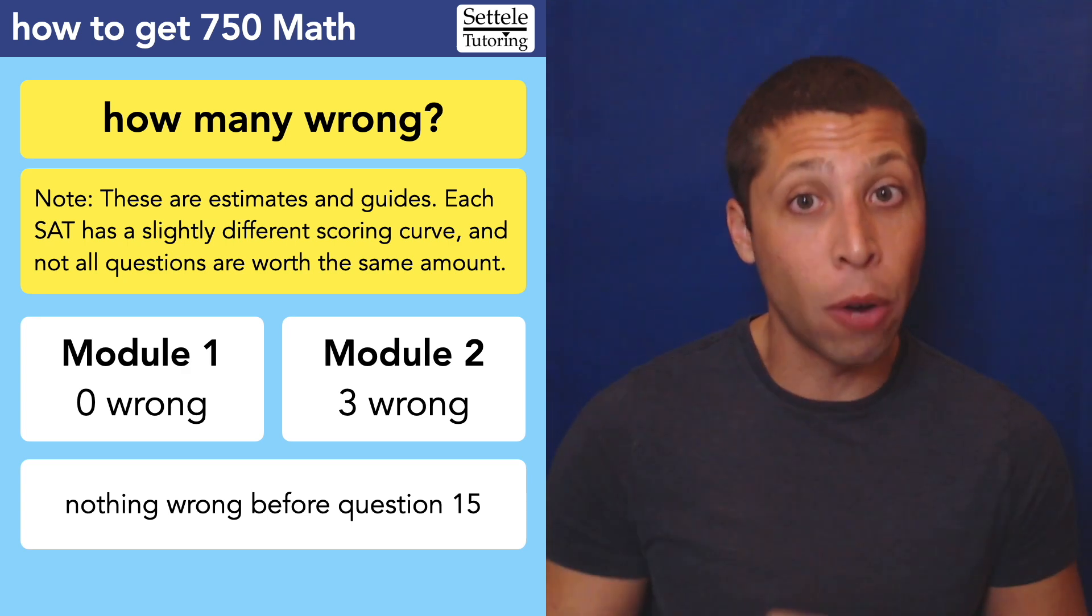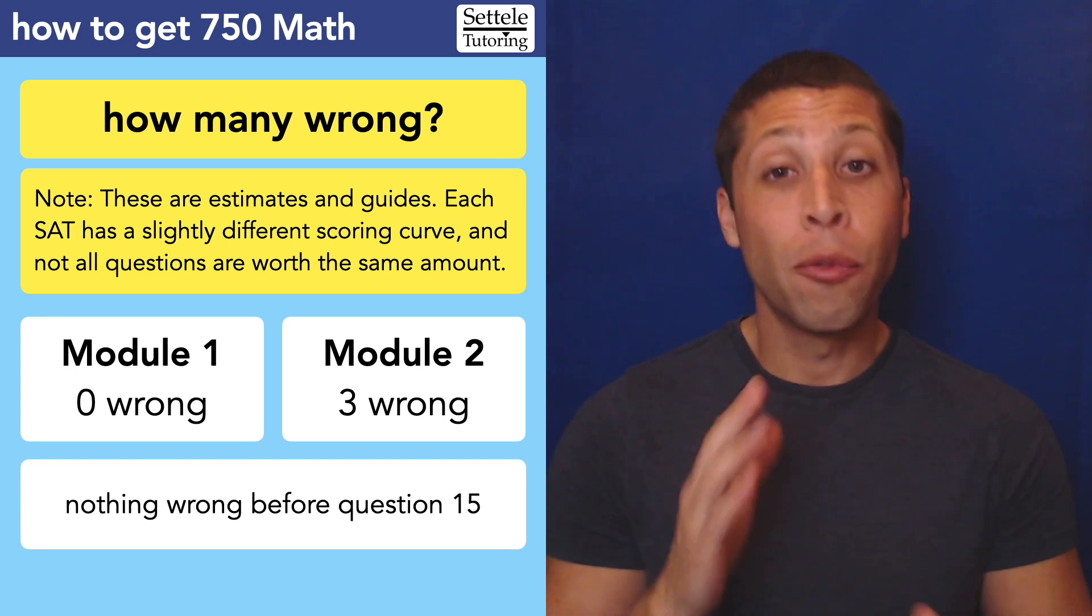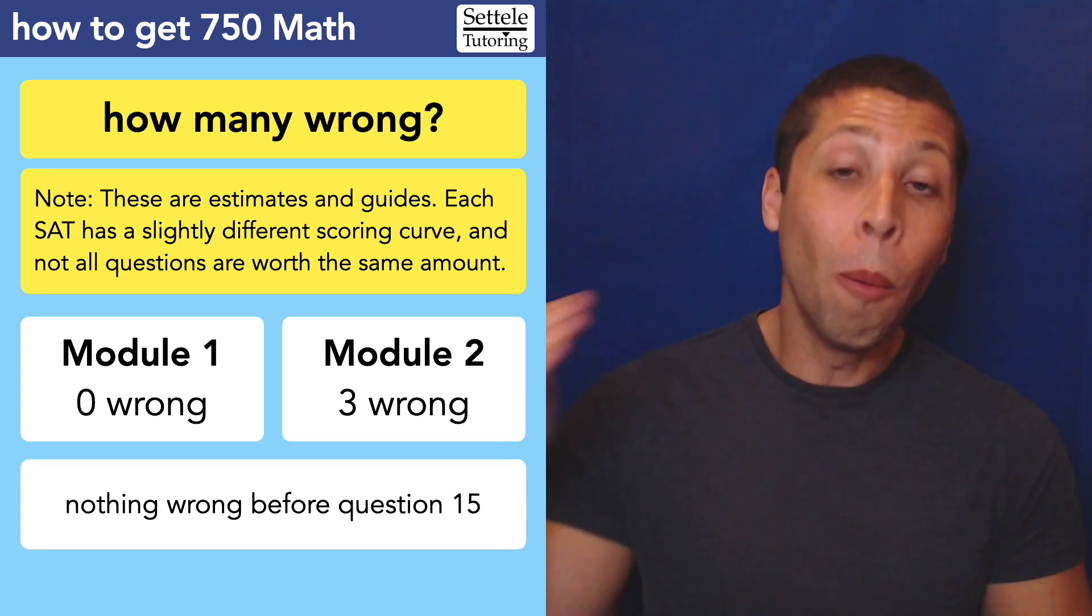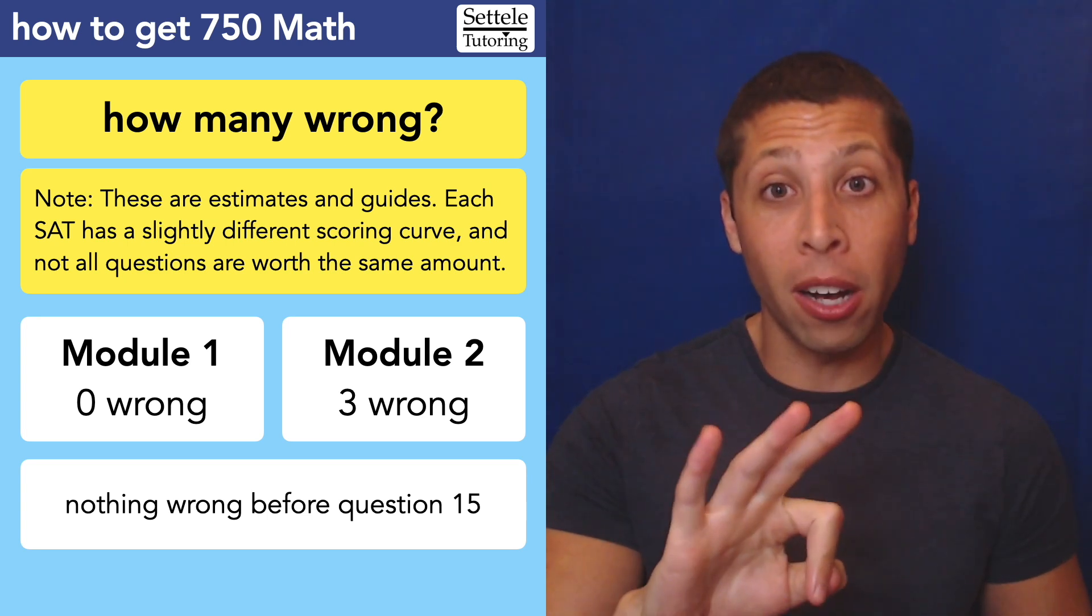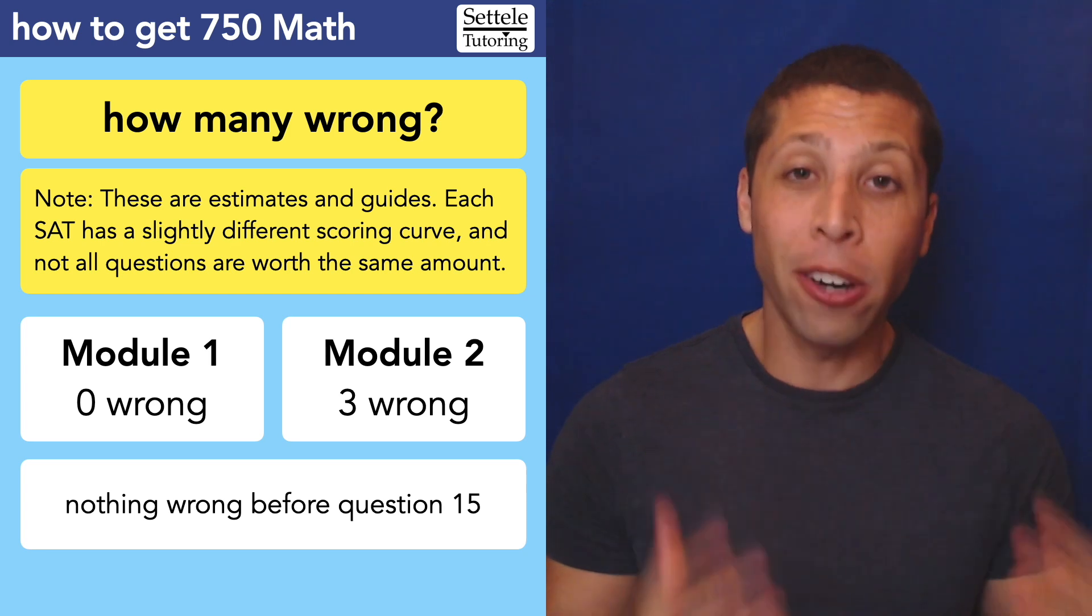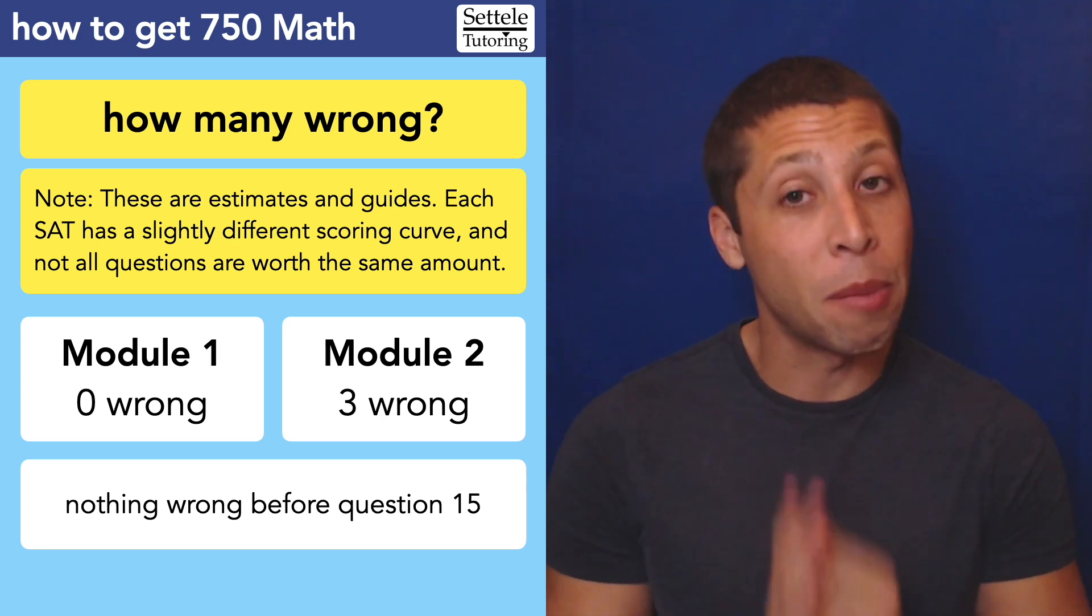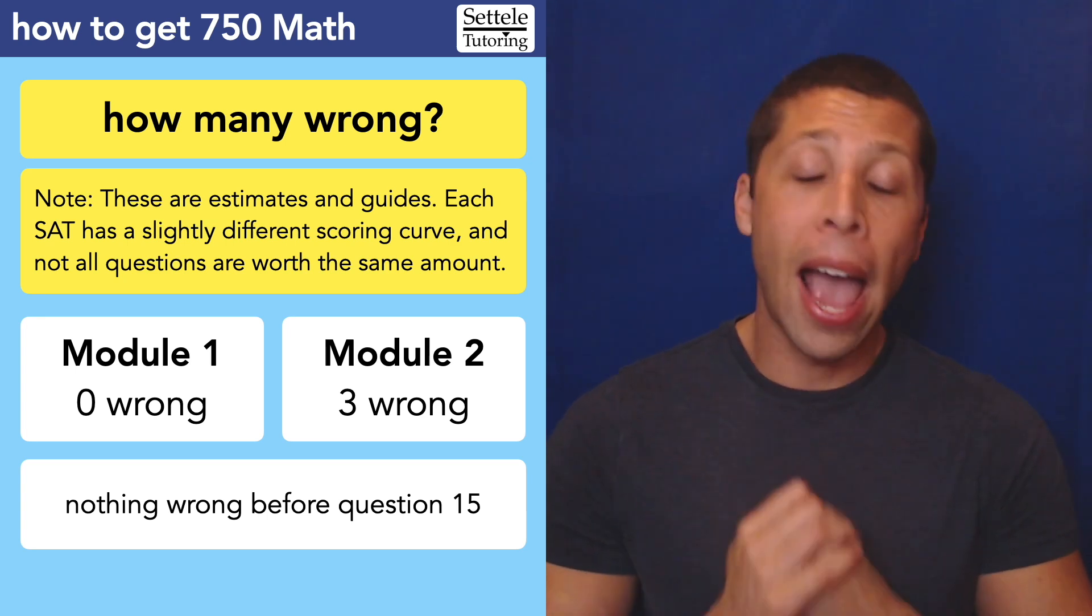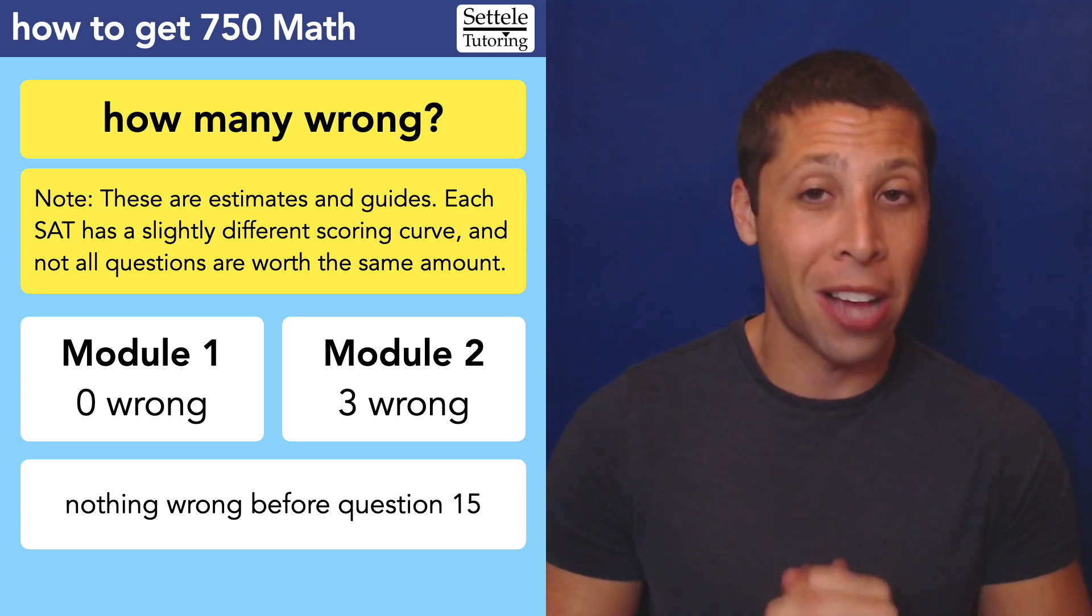And here's the thing, and this is kind of going to that note up there. The SAT, for whatever reason, punishes us for getting easy questions wrong more than it punishes us for hard questions. So if those three wrong are easy questions at the beginning of the module, they're not impressed by the fact that you got all the hard ones right. They are going to cost you more points, probably even get rid of that 750. So you've got to be really careful on the stuff that you know you can get right. And then at a certain point in the test, you're going to need to make smart choices about what you spend your time on.